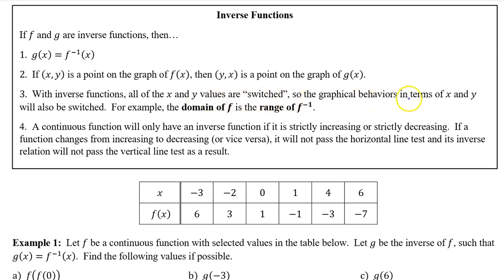So the graphical behaviors in terms of x and y will also be switched. For example, the domain of f is the range of f inverse. Number four, a continuous function will only have an inverse function if it is strictly increasing or strictly decreasing. If a function changes from increasing to decreasing or vice versa, it will not pass the horizontal line test, and its inverse relation will not pass the vertical line test as a result.